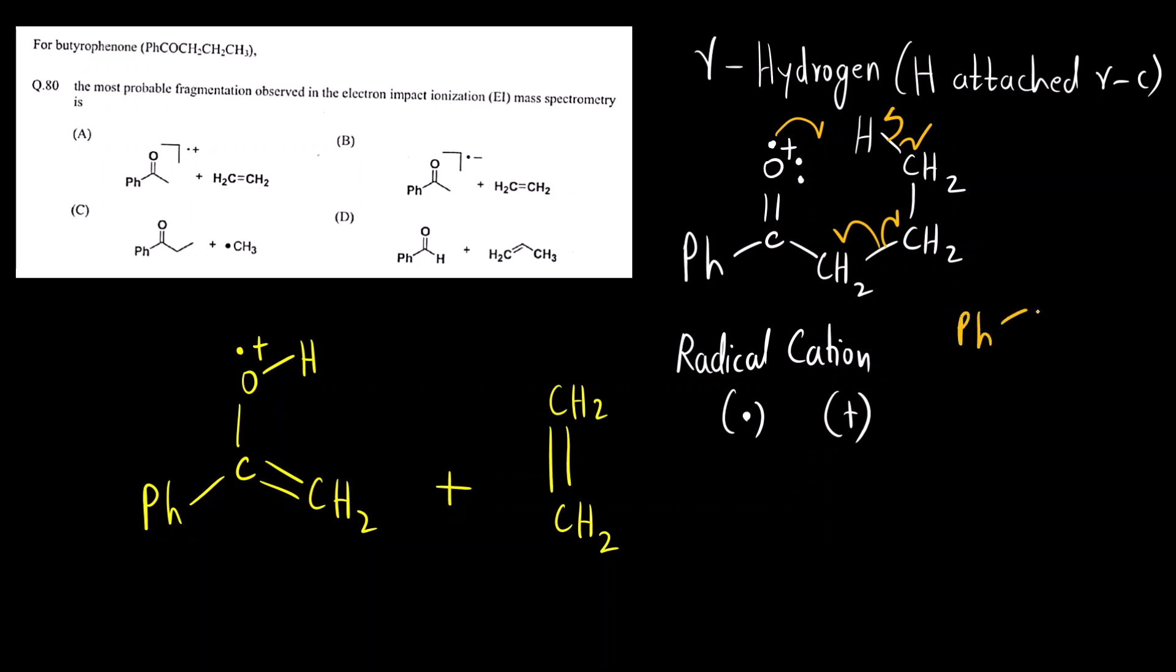So what we get is Ph-C double bond OH, now one lone pair is remaining and positive charge. Here what we have is CH2 radical. Now what will happen? This pi bond will break further.